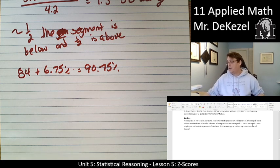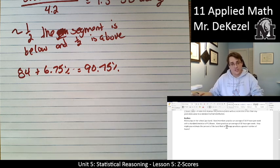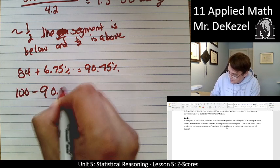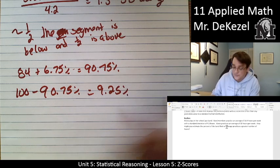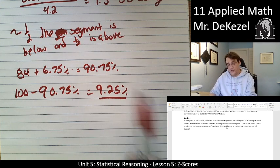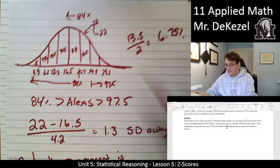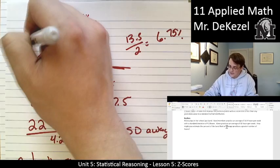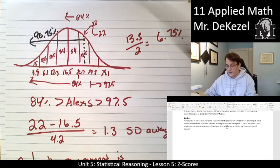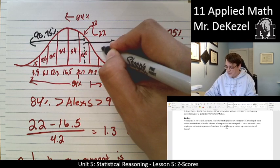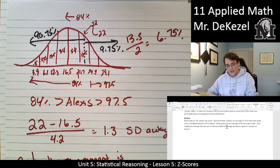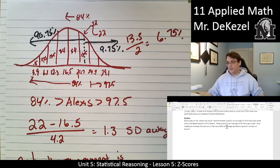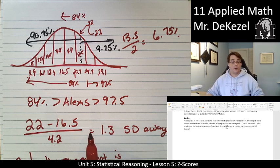Going back to the question — what percentage practices more hours? We take 100 minus 90.75% to get 9.25%. So approximately 9.25% practice more hours and 90.75% practice less. We have just essentially calculated a z-score. We'll do more examples, introduce the formula, and talk about what z-scores really mean.